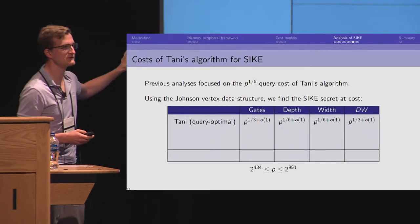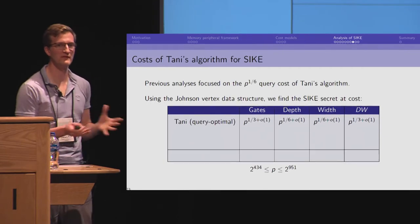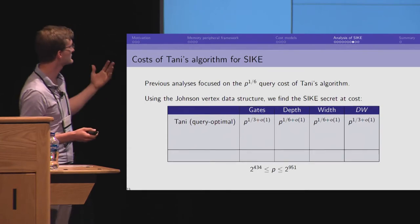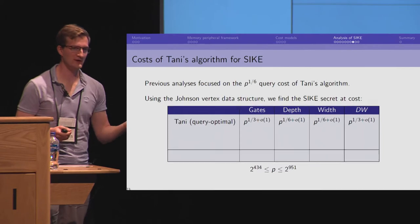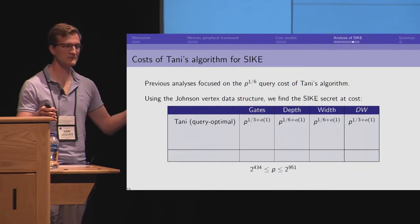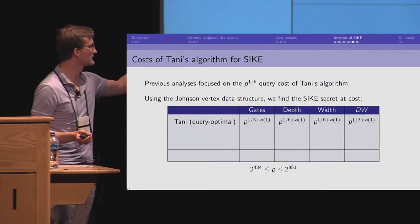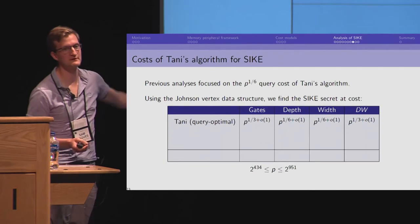And so, this Johnson vertex is actually the lowest gate cost to do the things that we need a quantum data structure to do for these random walks. So, we go back to Tani's algorithm. And previously, it was this P to the 1/6 query cost. They used P to the 1/6 memory. And so, immediately, this has a dw-cost of P to the 1/3. But using our data structure, we show that the gates are actually also P to the 1/3.